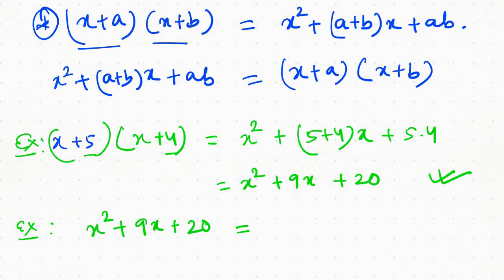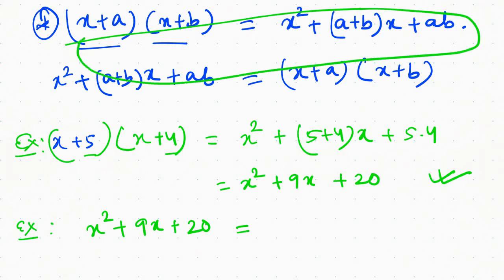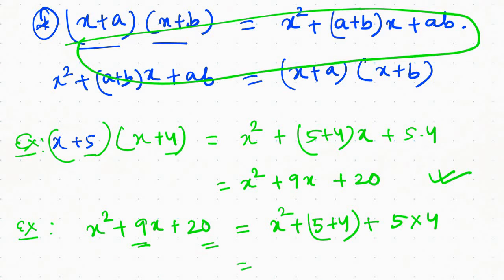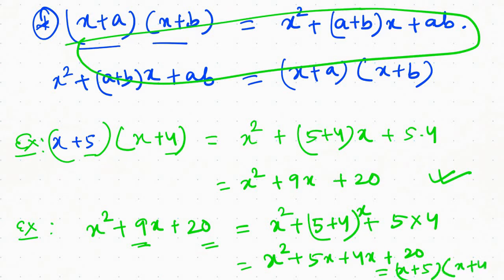Don't forget to write the formula. The identity is x plus a. If you want to write the formula, you choose the formula and apply it. x squared plus 4x plus 5x plus 20, which gives x plus 5, all into x plus 4.